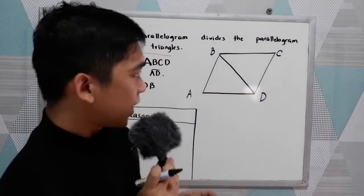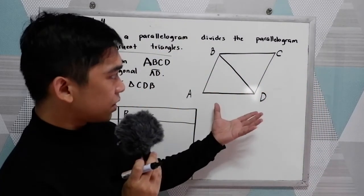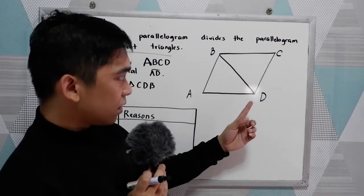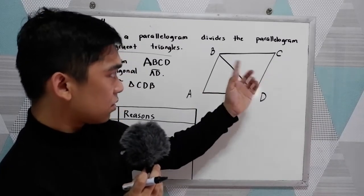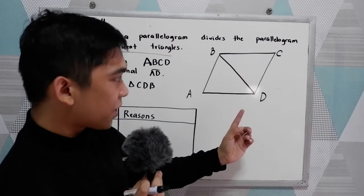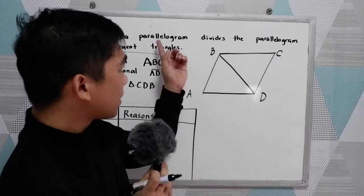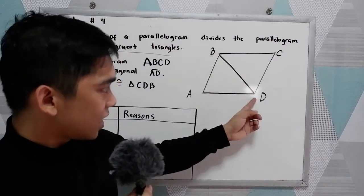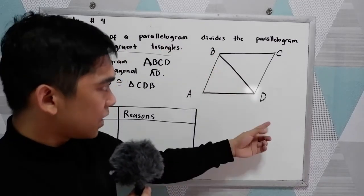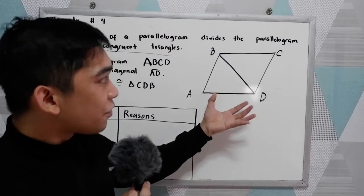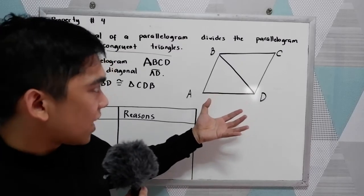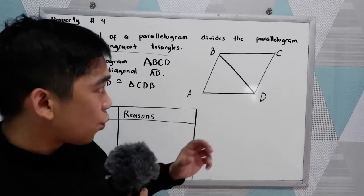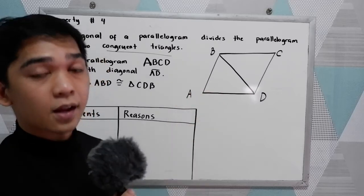So, to illustrate, let's have this parallelogram ABCD. If we're going to draw our diagonal, let's say diagonal BD, it will divide the parallelogram into two congruent triangles.